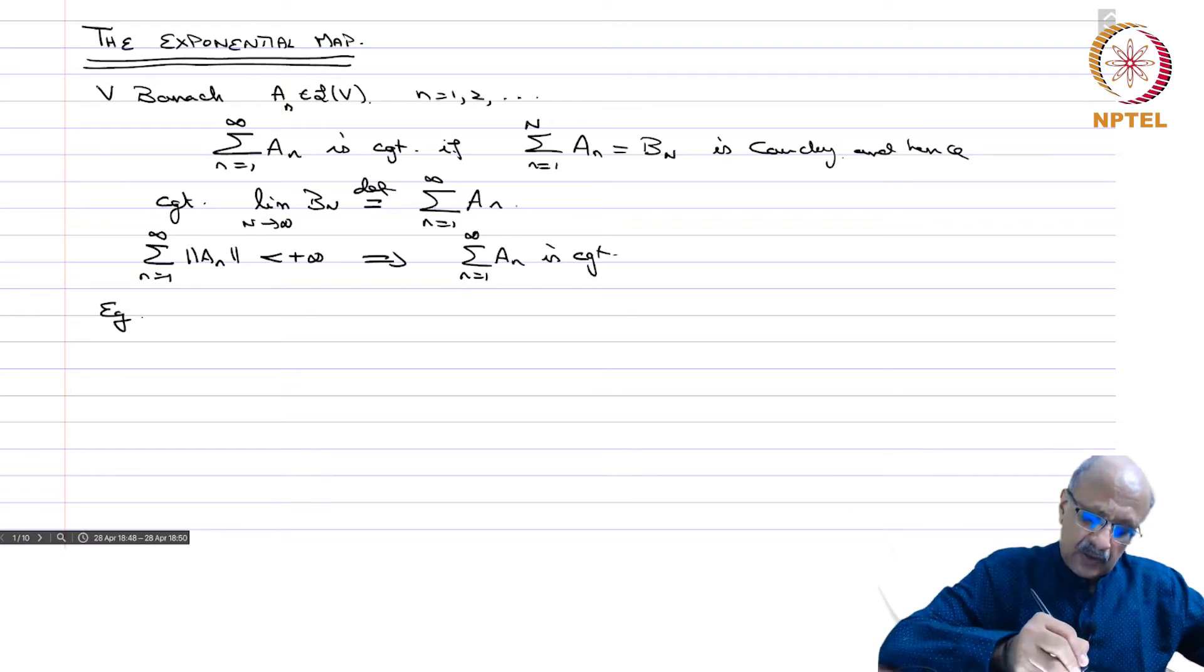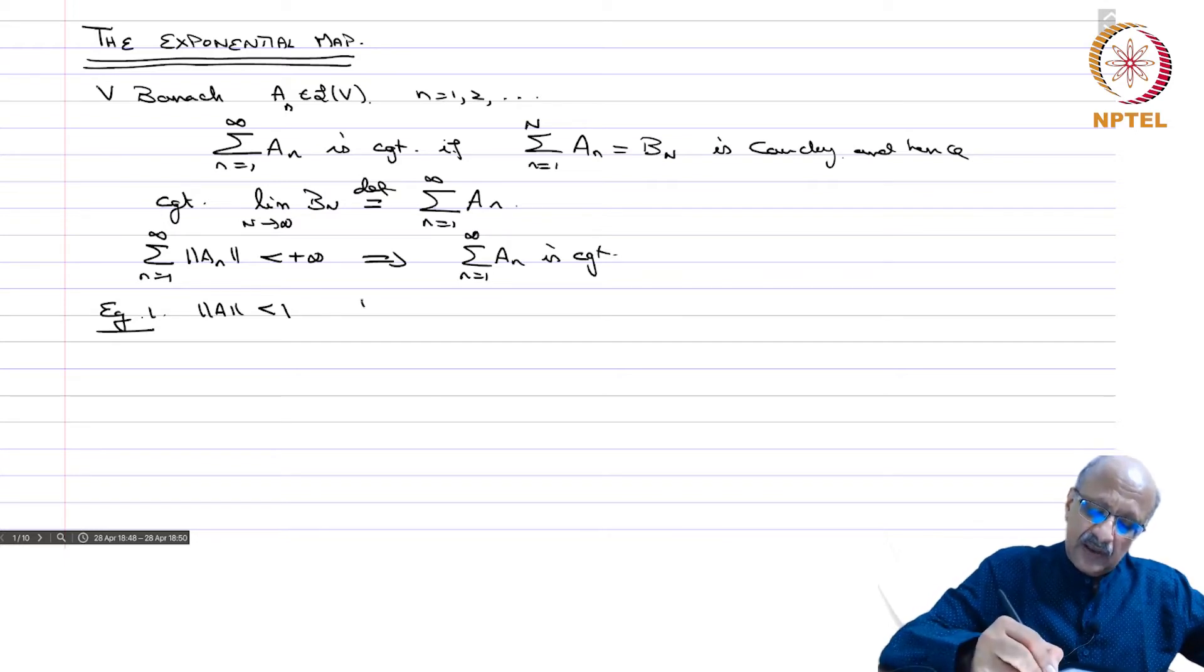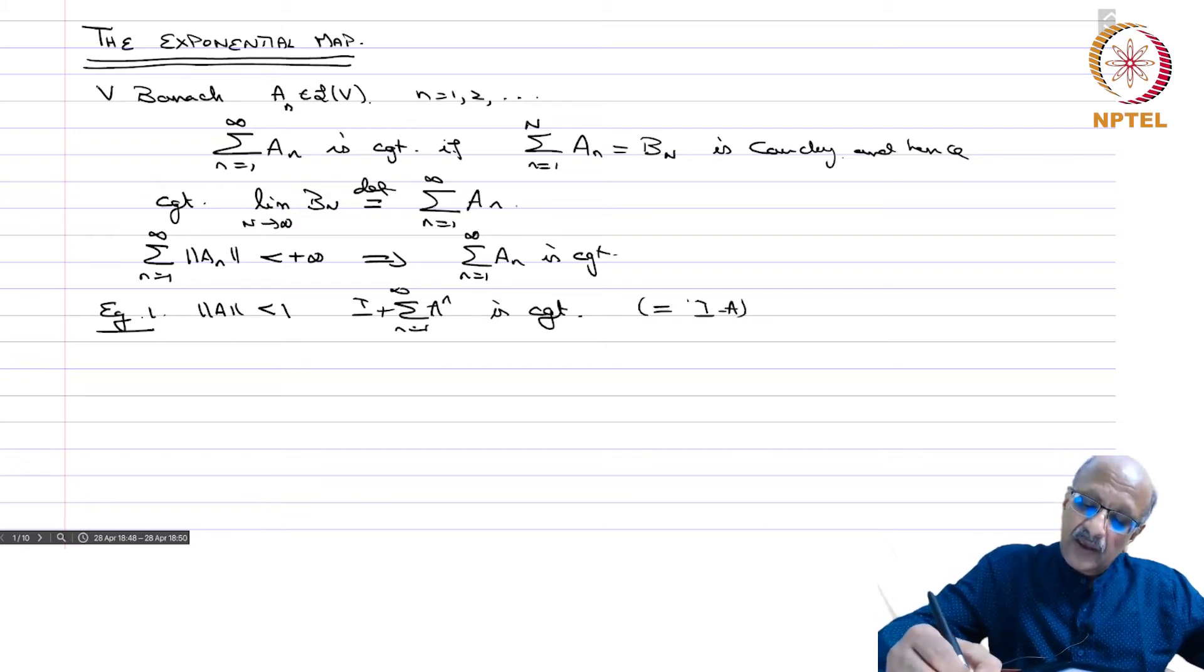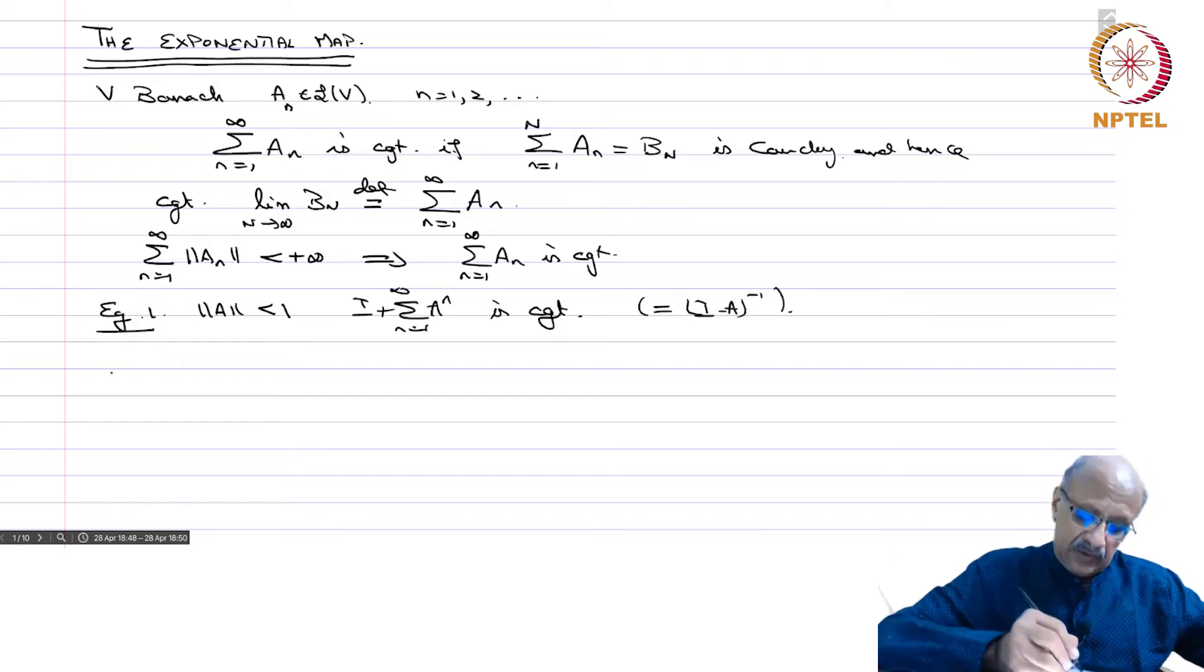So two examples. Example 1: If norm of A is strictly less than 1, then the series I plus sigma n equals 1 to infinity A^n is convergent. And in fact, the sum is equal to (I minus A)^(-1). This is called the Neumann series.